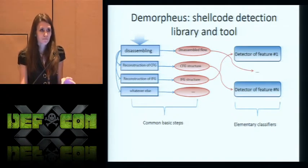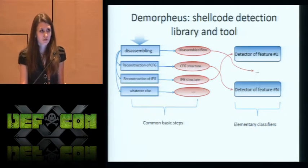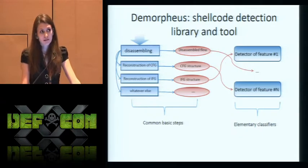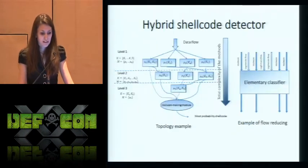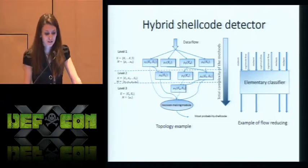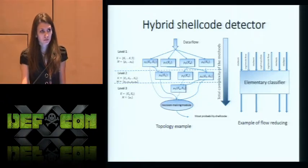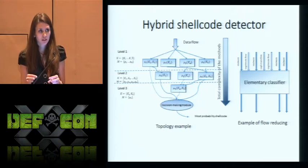Moreover, all of them use some common steps during their analysis, like a disassembly stage, reconstruction of the control flow graph, and reconstruction of the instruction flow graph. Thus, it seemed reasonable to implement a shellcode detection library in the way described in the current slide. Here's the main idea of our hybrid shellcode detector: we tried to construct an optimal data flow graph from elementary classifiers implemented in the shellcode detection library.